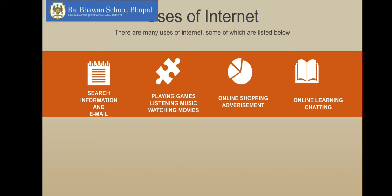We can chat, share images and videos with people from the other end of the world while sitting at our home. We can watch movies, play games, and listen to any language music using the internet. Internet has various pages from which we can gain knowledge about topics — that means we can do research work for any topic we are studying in school. We can also buy or sell things using the internet, which is considered online shopping, or we can advertise our requirements and what we are selling.